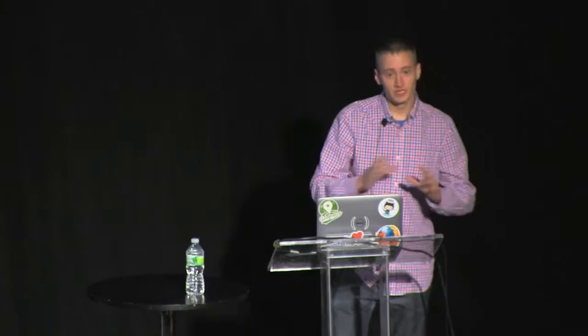We're going to take five clients, and client number zero is going to add the numbers 0, 5, 10, 15. Client number one is going to add 1, 6, and so on. They're going to do this concurrently, possibly on both sides of a network partition. At the end of the test, we're going to ask for all those numbers back. If the application fails and the database says you can't have that write, we don't expect to see the number in the final result. If the database lies and says it took your write, and it's gone, we know we've got a problem.